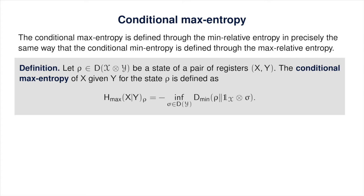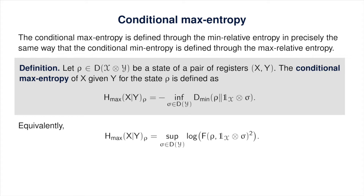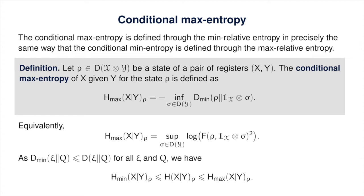Next, we'll briefly discuss the conditional max entropy, which is defined in terms of the min-relative entropy in an analogous way to how the conditional min-entropy is defined in terms of the max-relative entropy. Unwrapping the definition of the min-relative entropy reveals a simple expression. By the fact that the min-relative entropy is upper bounded by the ordinary quantum relative entropy, the conditional max entropy is at least as large as the ordinary conditional quantum entropy, giving us the ordering relations consistent with what you might expect from measures bearing these names.